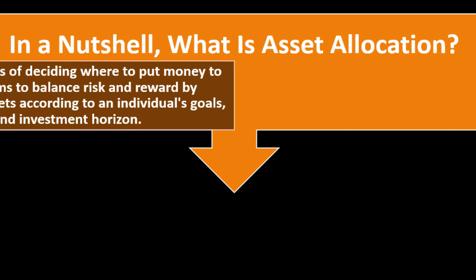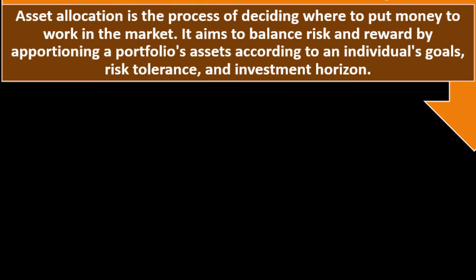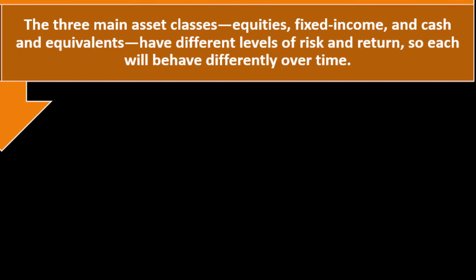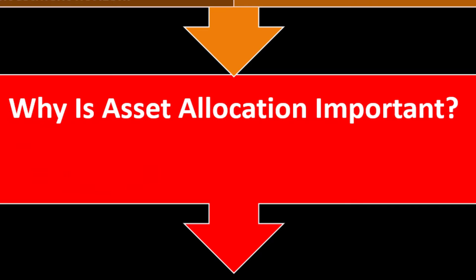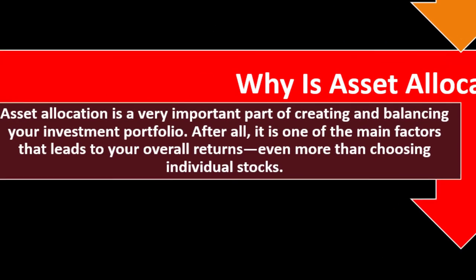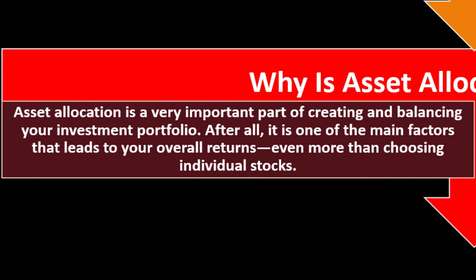In summary, asset allocation is the process of deciding where to put money to work in the market. It aims to balance risk and reward by apportioning a portfolio's assets according to an individual's goals, risk tolerance, and investment horizon. The three main asset classes — equities, fixed income, and cash and cash equivalents — have different levels of risk and return. Asset allocation is one of the main factors leading to overall returns, even more than choosing individual stocks.